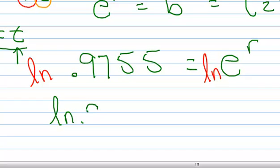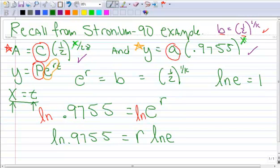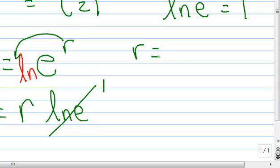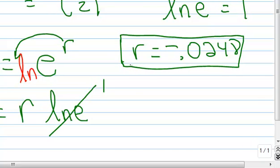So I have the natural log of .9755. When I take the log of the right-hand side, the exponent comes down in the front. See, the r comes down in the front. And that's times the ln of e. And the ln of e is one, so I can just simply get rid of that. And then I can calculate with my calculator what that is. And then r turns out to be negative .0248. Everybody make sure you can use your calculator that you know where your ln button is to find that.